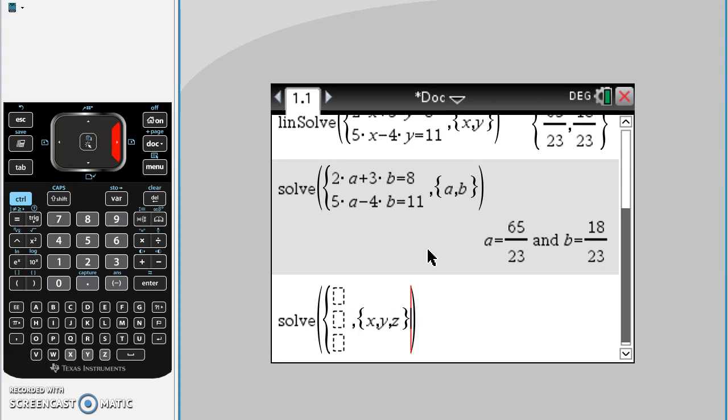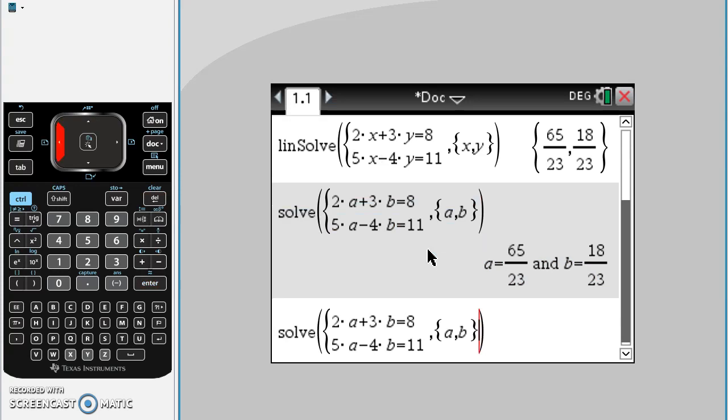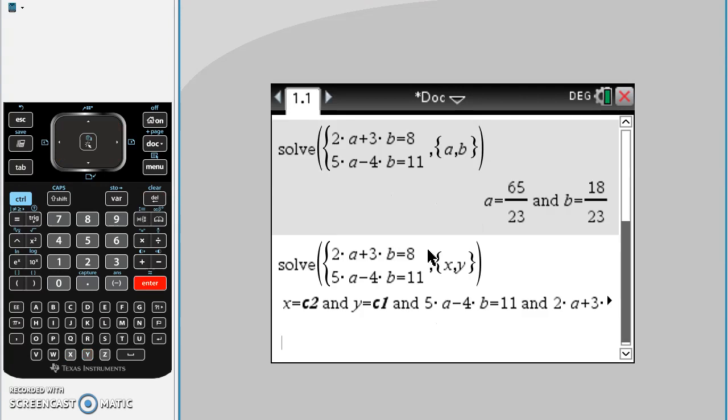There's a couple of mistakes people can make. So we might have this equation but we've forgotten to change the letters. If you end up with an answer like this, it's basically saying that the letters you're solving for are not the same as the letters in the equation. So that's something to look out for.